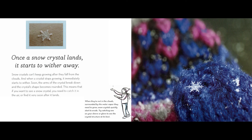Once a snow crystal lands, it starts to wither away. Snow crystals can't keep growing after they fall from the clouds, and when a crystal stops growing, it immediately starts to wither. Soon, the arms of the crystal break down and the crystal's shape becomes rounded. If you want to see a snow crystal, you need to catch it in the air or find it very soon after it lands. When they're not in the clouds, surrounded by the water vapor they need to grow, snow crystals quickly start to erode. Try catching one on your sleeve or glove to see the crystal structure at its best.